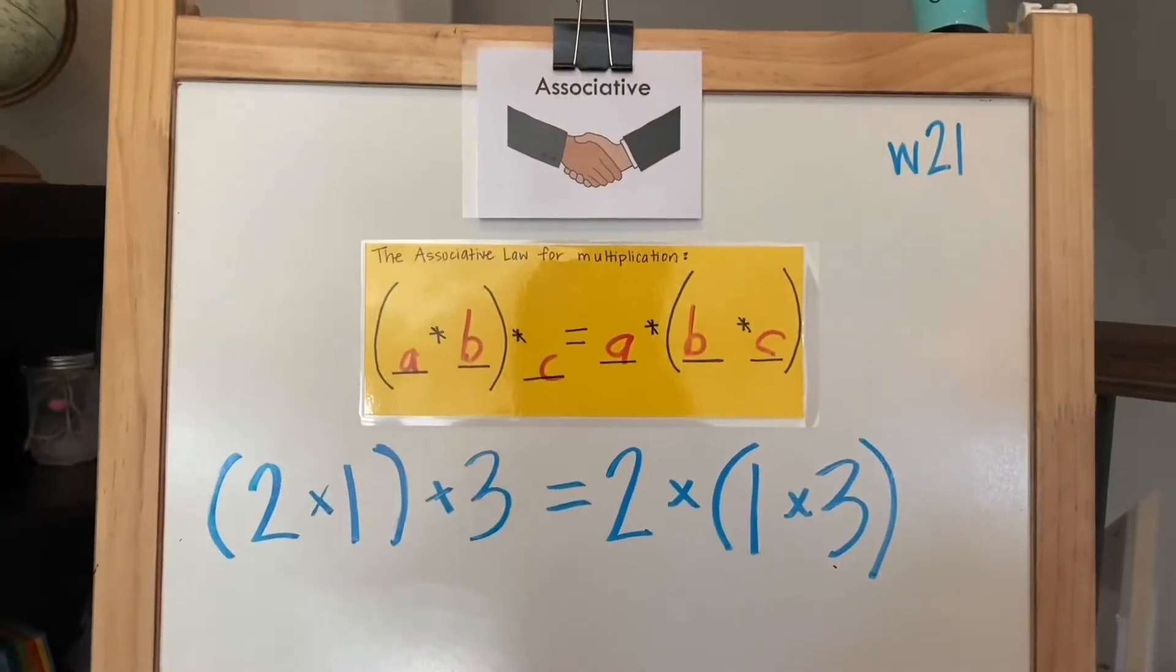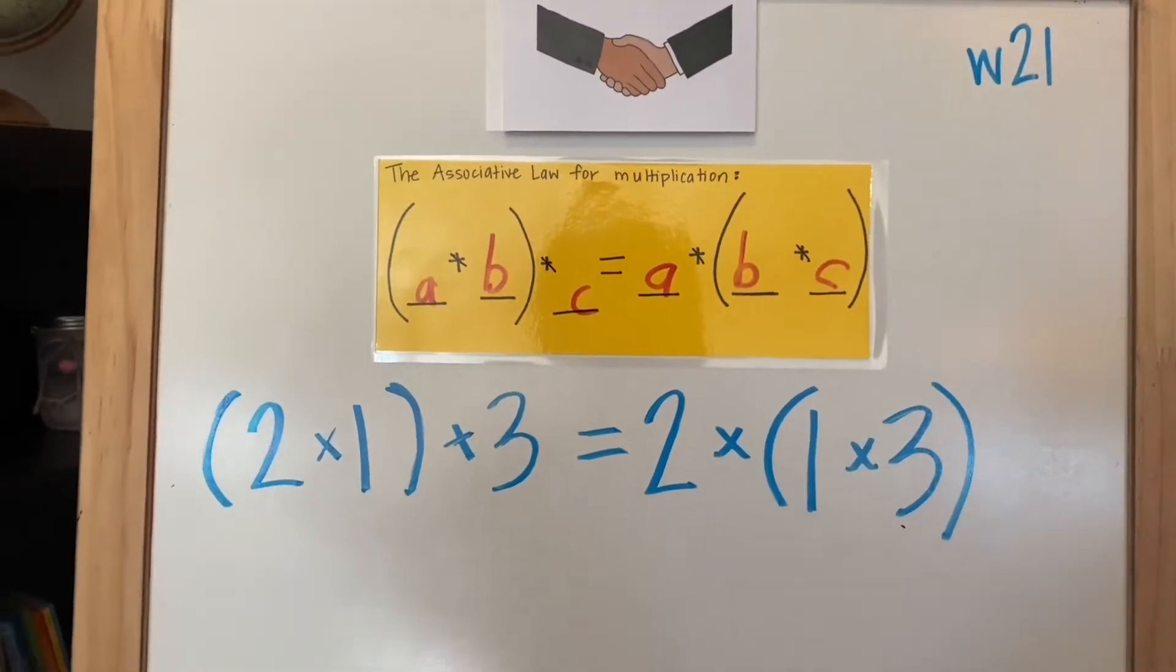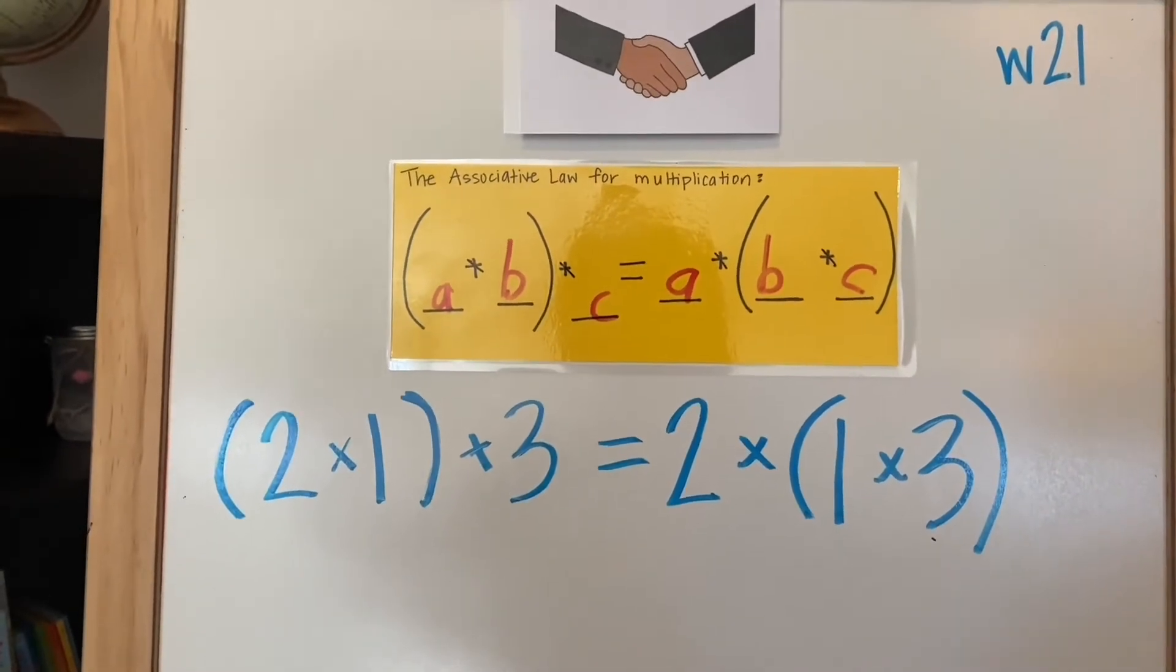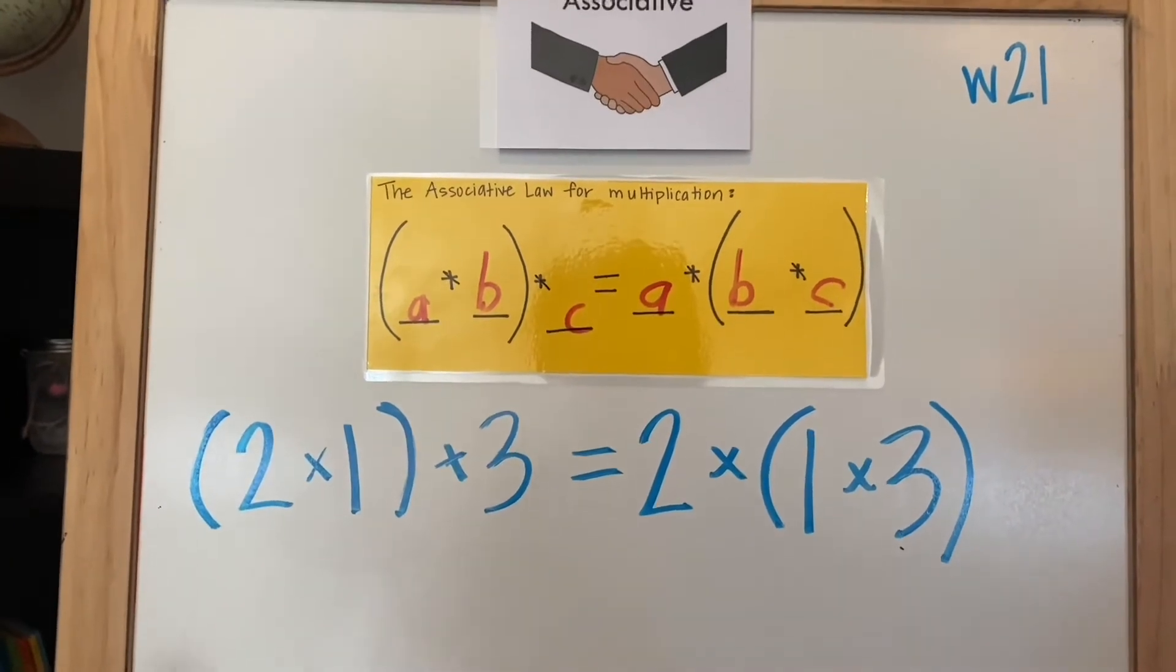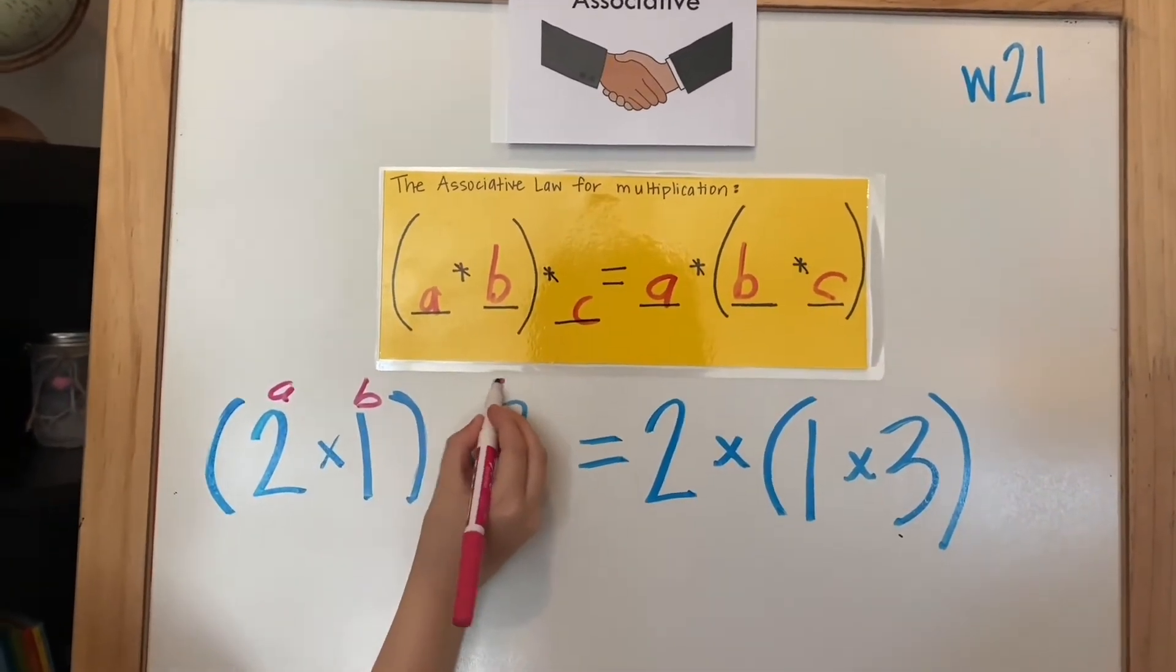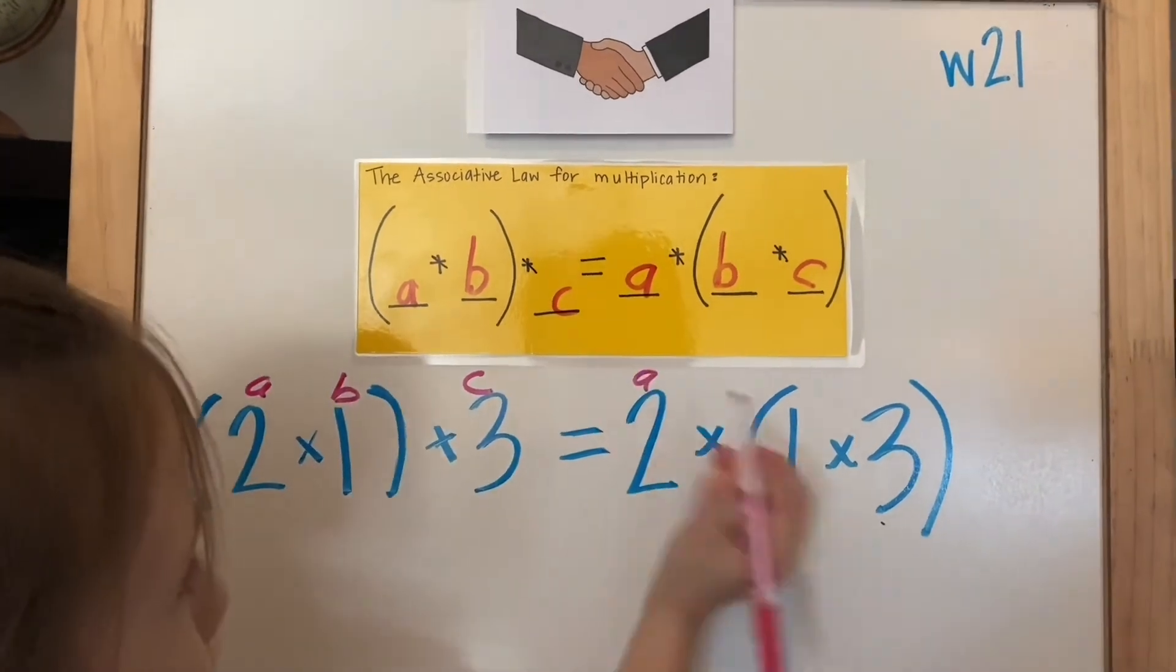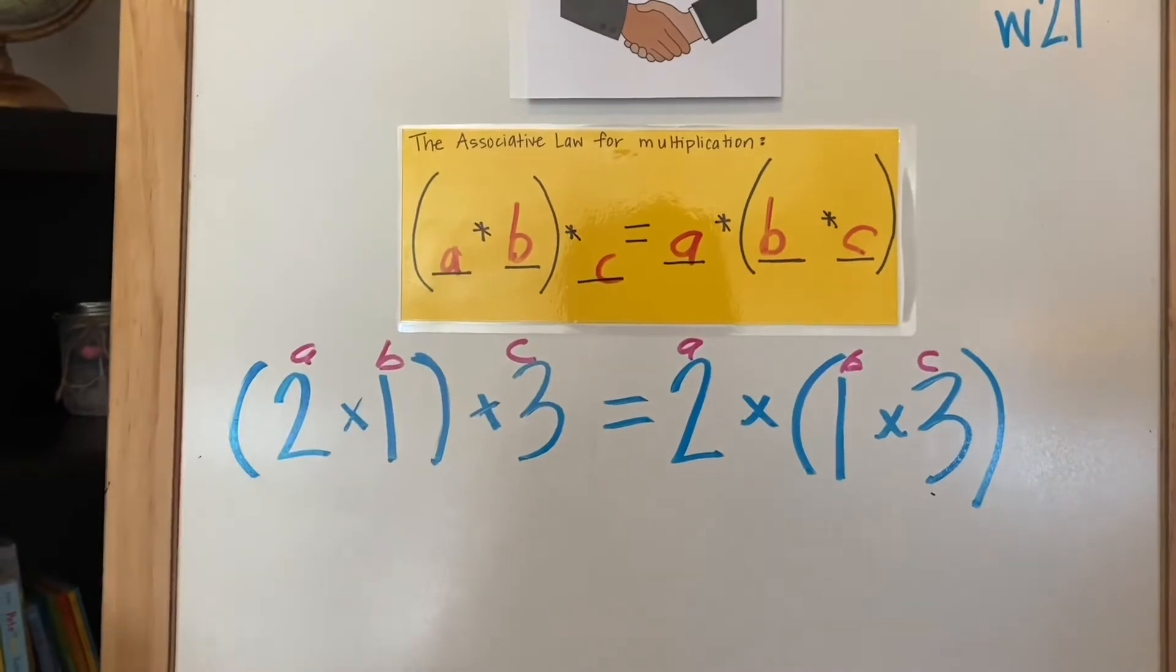This is the associative law of multiplication. We're going to test our theory. Here, A equals 2, B equals 1, C equals 3. You ready to test our theory? Hazel's going to write it so we can see.